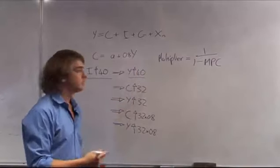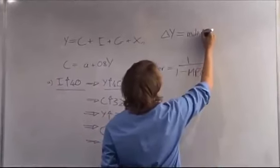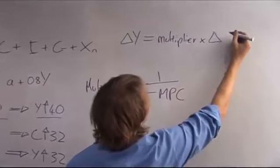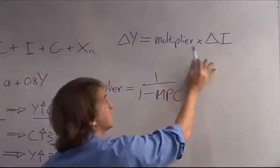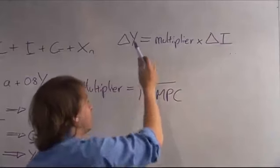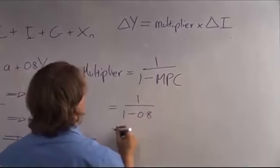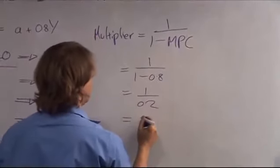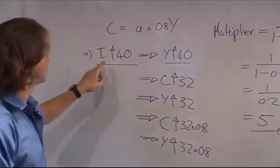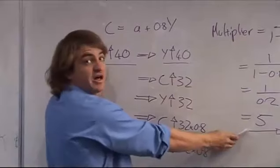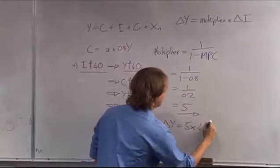Why do we want that multiplier? We can see that the change in Y, or the change in GDP, is equal to the multiplier times the original change in one of your factors — in this case, investment. So if we knew the multiplier and we knew the change in investment, we could see the eventual change in income. Therefore, if the multiplier is 1 over 1 minus MPC, it's equal to 1 over 1 minus 0.8, which is equal to 1 over 0.2, which is equal to 5. So if the change in investment was 40 and your multiplier is 5, the change in Y is equal to 5 times 40, which equals 200.